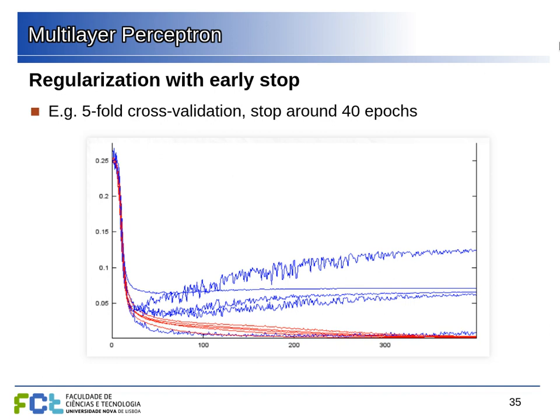The network can overfit because it can have many parameters and start learning details of the training set that do not generalize. If you plot the training error and validation error over epochs, the training error keeps reducing but the validation error may start increasing — after about 30 epochs in this example the network starts to overfit. Even though the training error keeps reducing, it's best to stop training at that point. This regularization technique — stopping when the validation error starts to increase — is called early stopping.